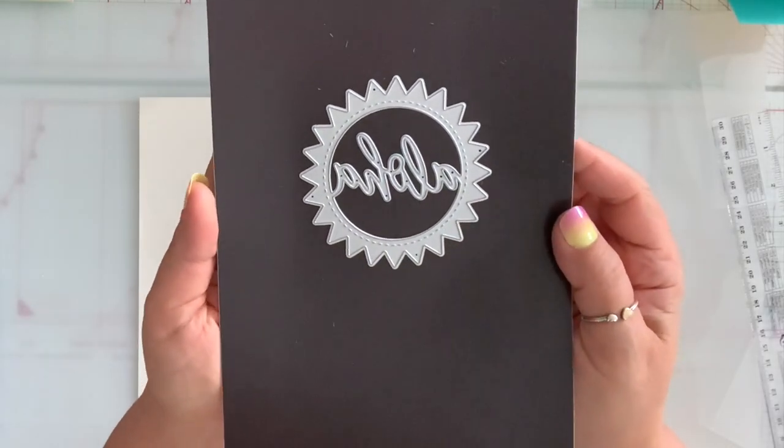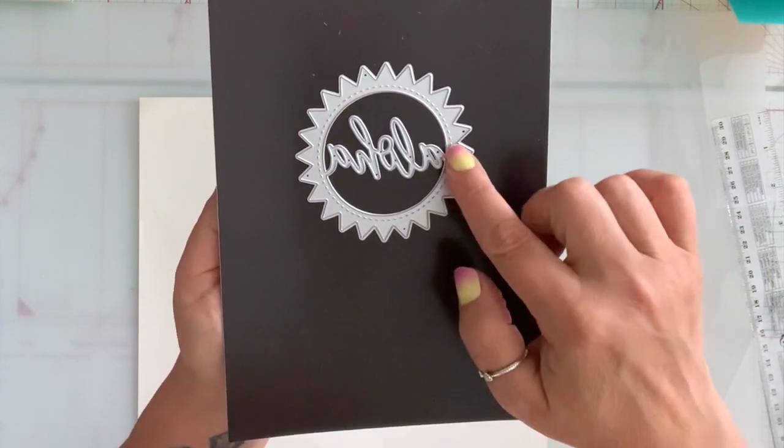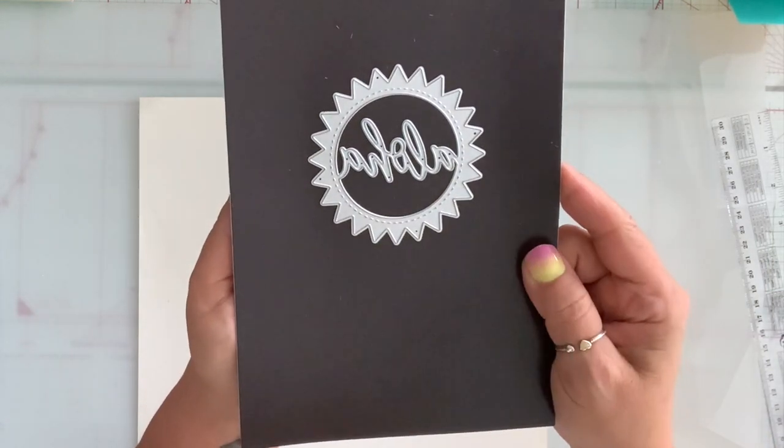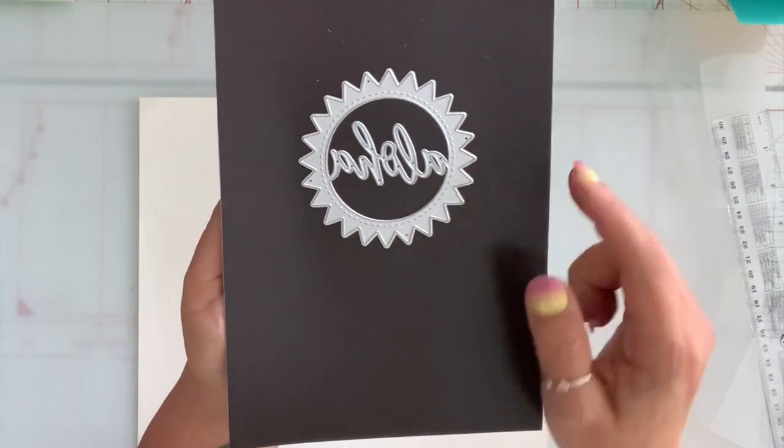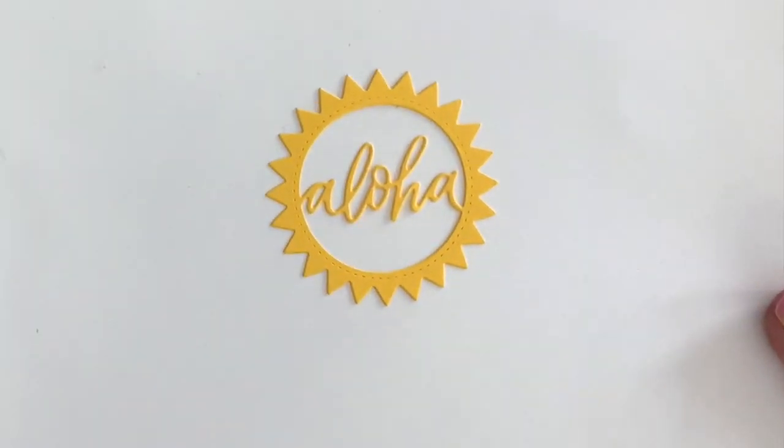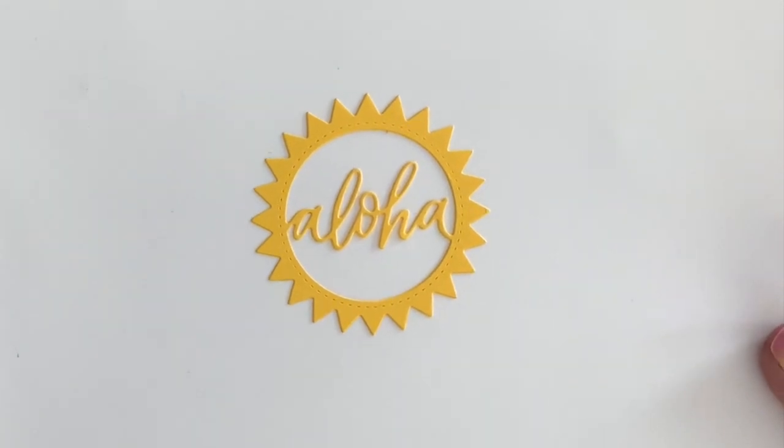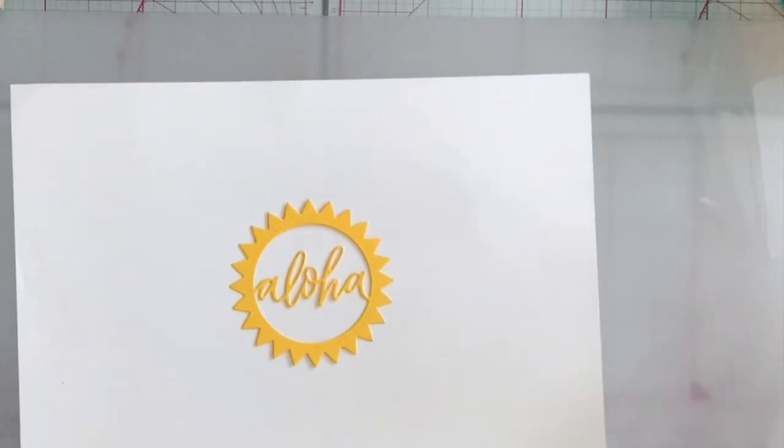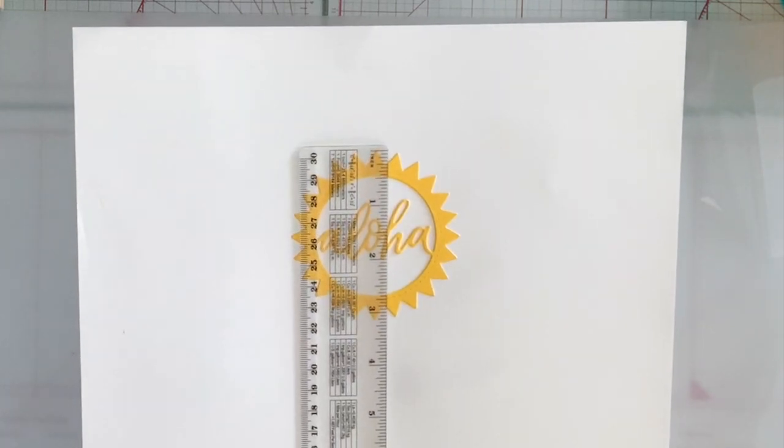I got this die and this cuts out a sun shape and it has the word aloha in the middle and they're attached. And this is what it looks like. And it is a little over three inches.